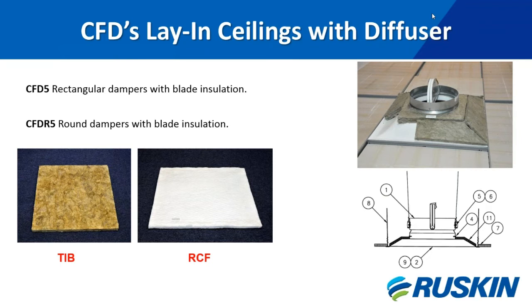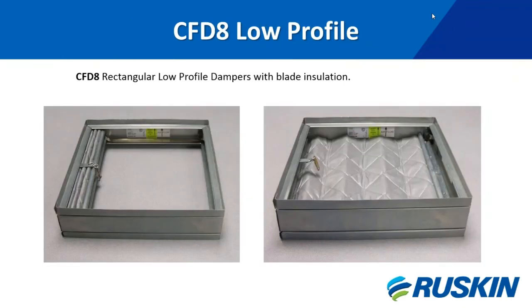Next is the CFD 5 for lay-in ceilings or diffusers with a smaller neck — the CFD 5 should be used. The CFD 5 or CFD R5 are supplied with a TIB (mineral wool thermal insulation blanket) or an RCF (refractory ceramic fiber thermal insulation blanket) that is used to cover the back side of the diffuser. Next is the CFD 8, which is a low-profile damper used just like the CFD 2 series but where space is restricted.